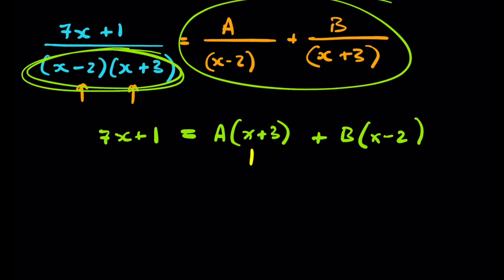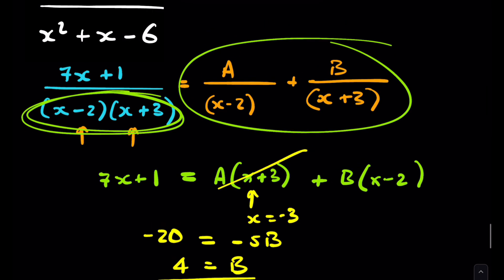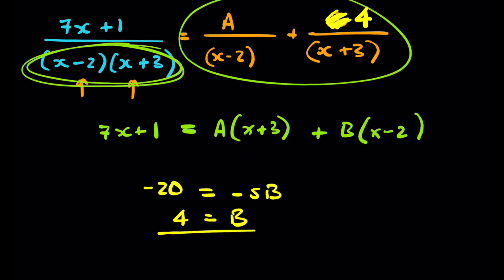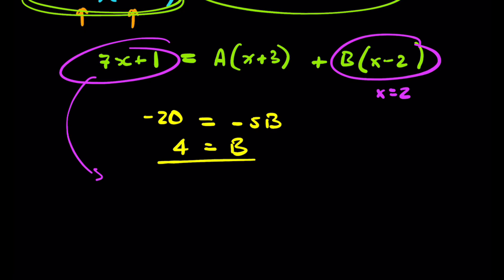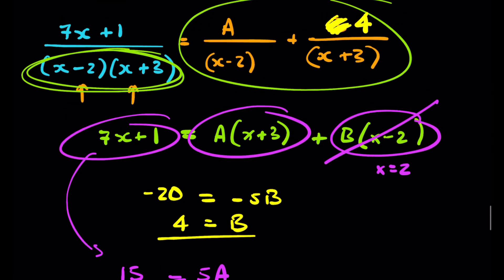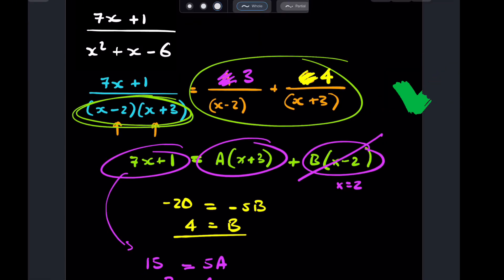We pick x=−3: the left gives −21+1=−20, the A term disappears, and on the right we have −5B. So −20=−5B, giving B=4. Now pick x=2: the left gives 14+1=15, the B term disappears, and on the right we have 5A. So 15=5A, giving A=3. Substituting A=3 and B=4 back in completes this partial fraction decomposition.